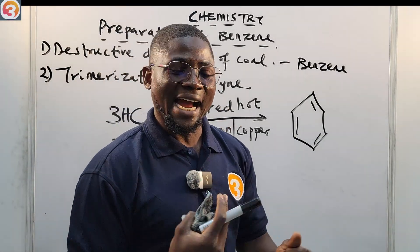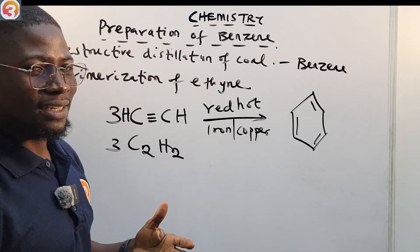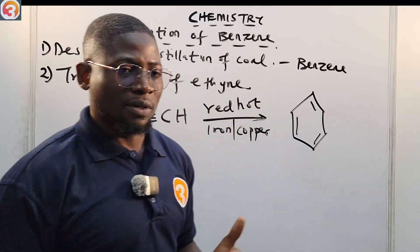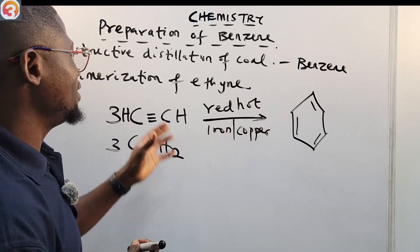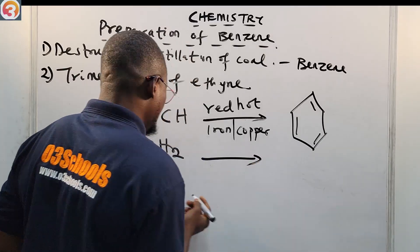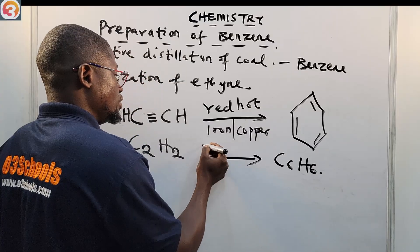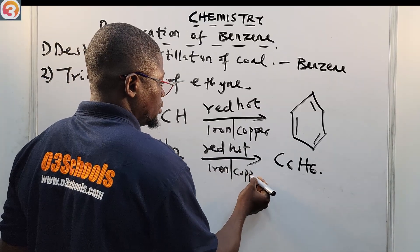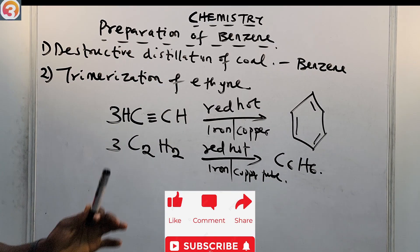When you see 'red hot' in chemistry it means the temperature is very high. This kind of reaction follows what I want to call free radical mechanism, but that is beyond the scope of this class. So the key point is: trimerization of ethyne — three molecules of C₂H₂ passed through a red hot iron or copper tube — gives us C₆H₆, which is benzene.